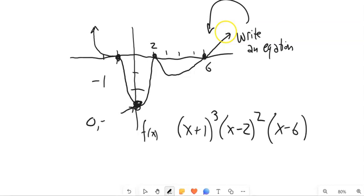Oh, and it looks like this is the point 0, negative 3. So I'm going to say I have some multiplier out here. So I've got all this. I just don't know what this multiplier is.